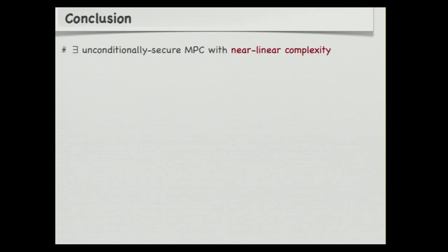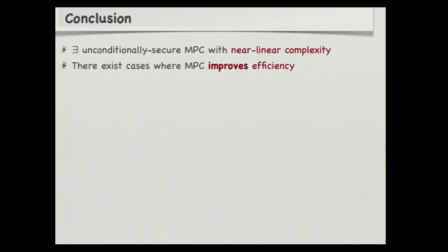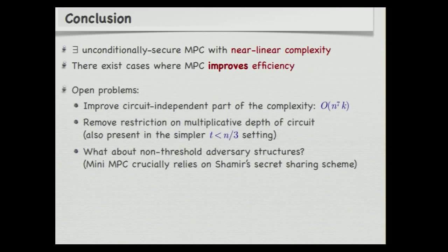In conclusion, there exists an unconditionally secure multiparty computation with linear communication complexity also in the setting of unconditional security with a dishonest minority. Another conclusion is that in some cases, multiparty computation actually improves efficiency — using MPC as a subroutine can help. An open problem is generalizing these results to the non-threshold adversary case, since our technique relies on the symmetry property of Shamir's secret sharing scheme, and it's not clear what can be done with another linear secret sharing scheme that may not have such a nice symmetry property.